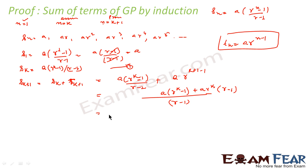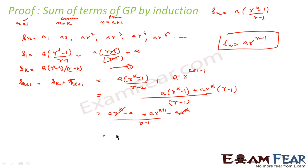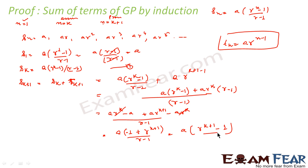Expanding, we get: a times r to the power k minus a plus a times r to the power k plus 1 minus a times r to the power k, all over r minus 1. The a times r to the power k terms cancel, leaving a times (r to the power k plus 1 minus 1) by (r minus 1), which is exactly s of k plus 1 by the formula. LHS equals RHS. Thus we have proved the formula by induction.